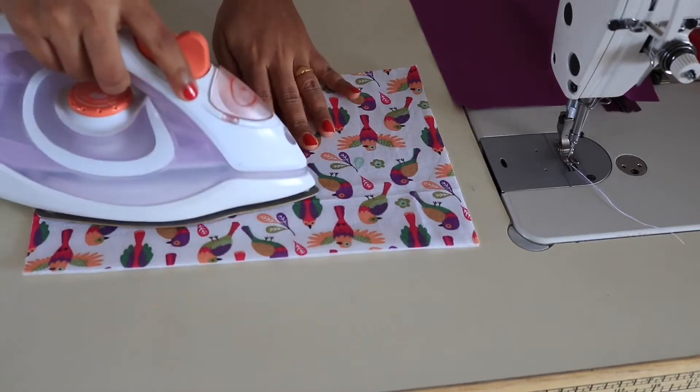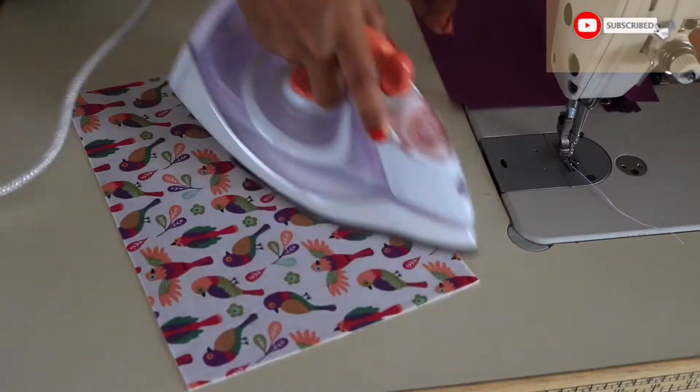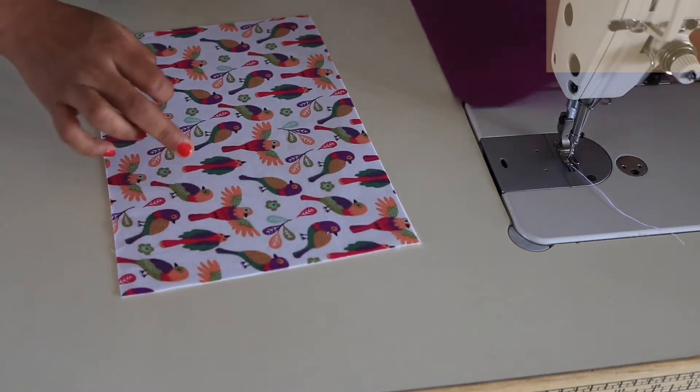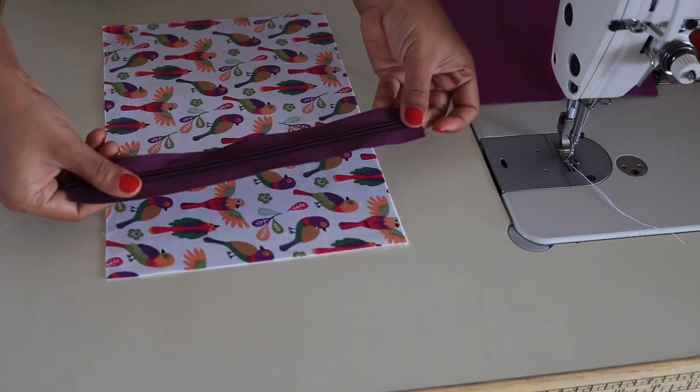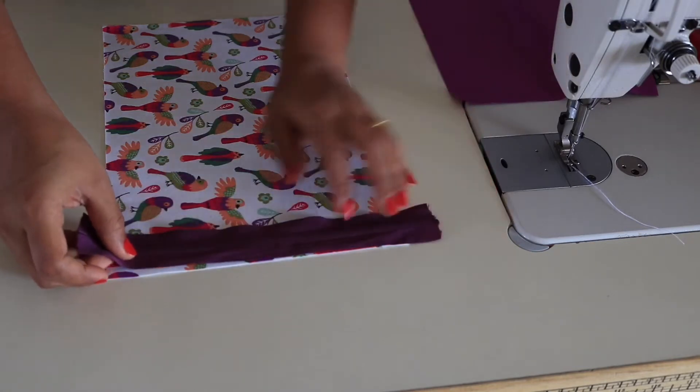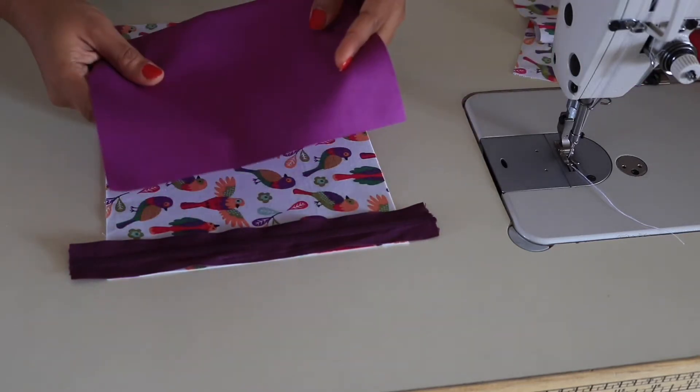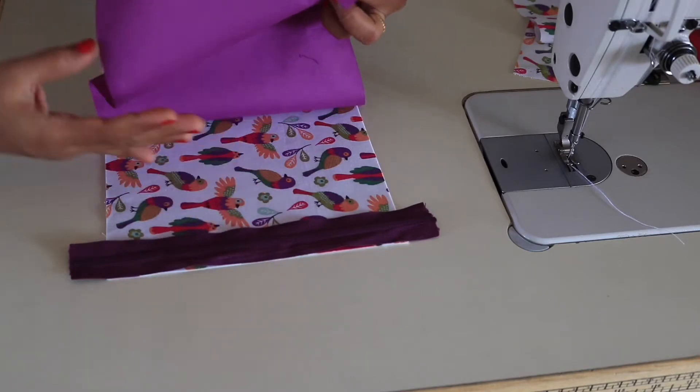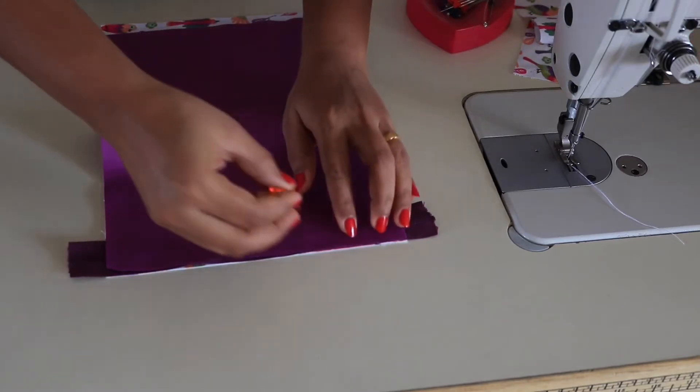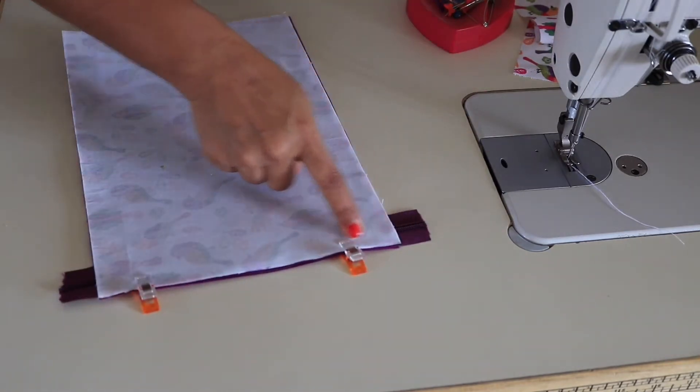First fuse the interfacing to the wrong side of the fabric. Now install the zipper on the short side of the fabric. Lay your fabric flat, then lay your zipper with right side facing toward the right side of fabric. Then lay your lining on top of it with right side facing down. Align everything and clip. Now make a stitch all the way down.